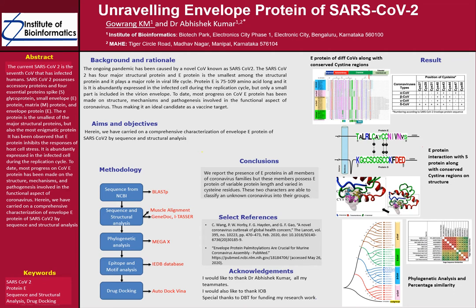SARS-CoV-2 has four major structural proteins. The E-protein is the smallest among them and plays a major role in the viral life cycle. Though it is a small protein, it is the most enigmatic among the structural proteins.